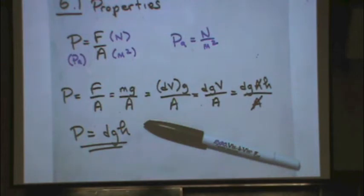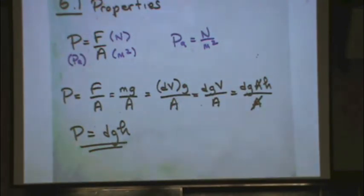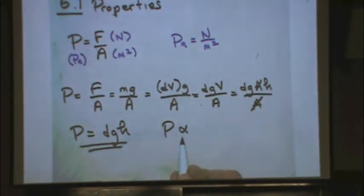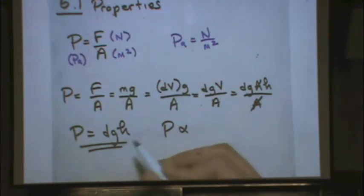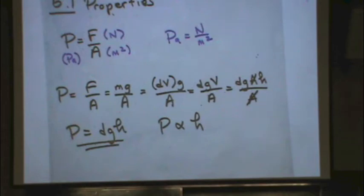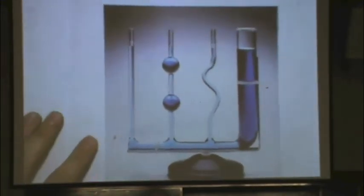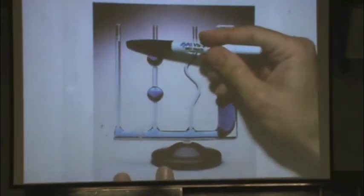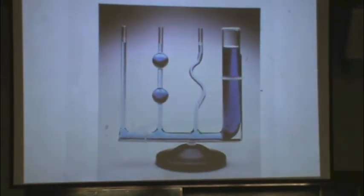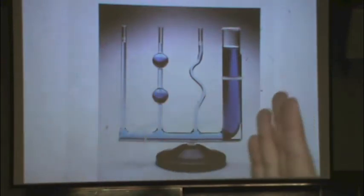The cool thing is that pressure is proportional to height, since density and gravity are constants. This means the area of the pool is irrelevant. There's an interesting picture showing liquid connected at the bottom through containers of different areas, shapes, and twists — but the liquid level height is identical for all of them. It doesn't matter the size of the container.